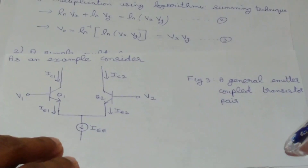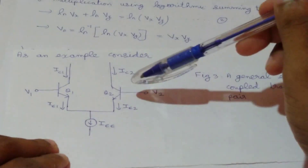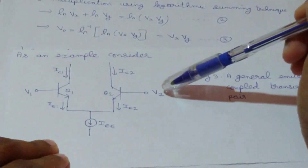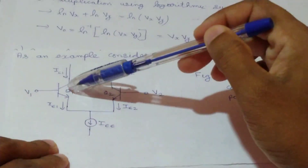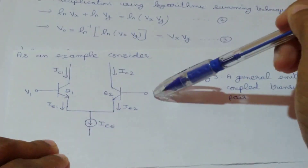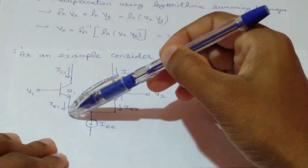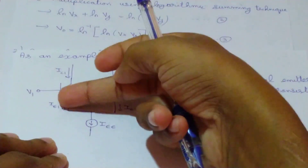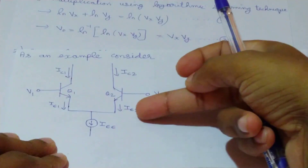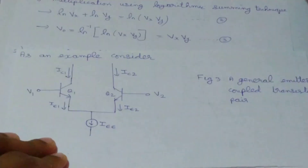Consider this general emitter coupled transistor pair circuit. Here, instead of a differential input, two separate inputs are applied: V1 is the input to the base of Q1 and V2 is the input to the base of Q2. IE1 is the emitter current of transistor Q1 and IE2 is the emitter current of transistor Q2.